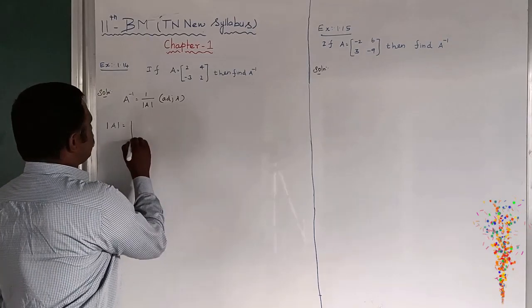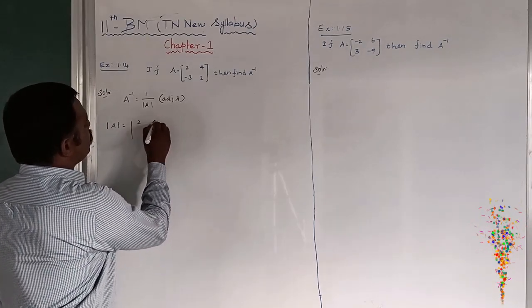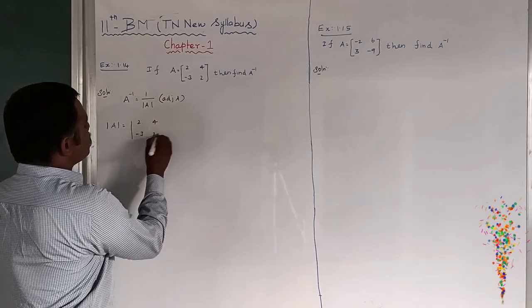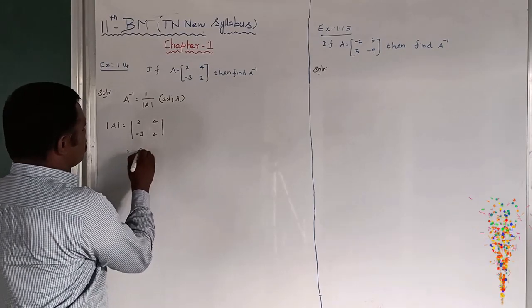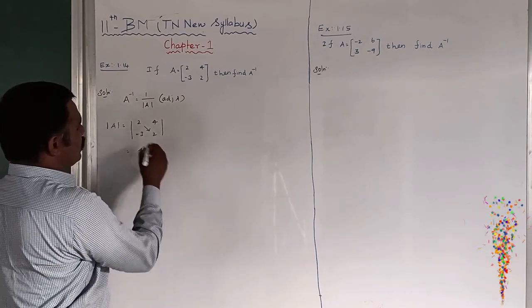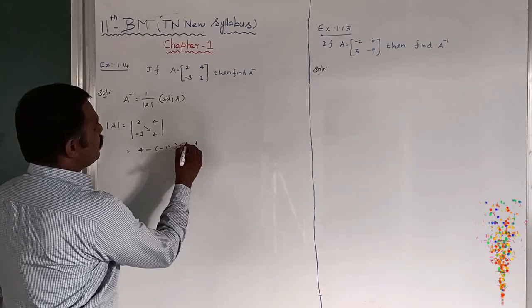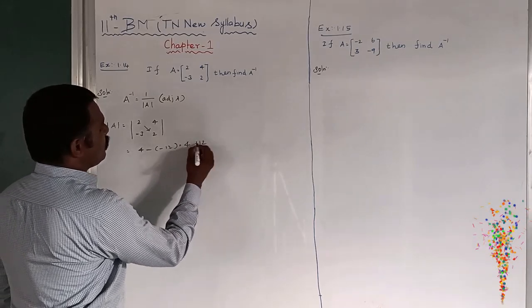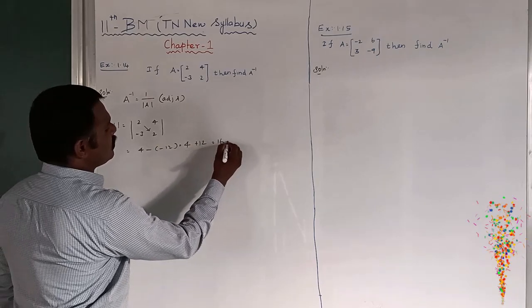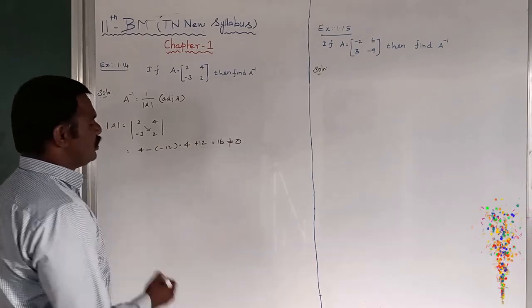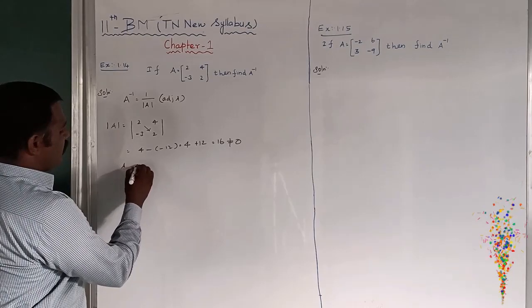So first we have to find out the modulus of A: 2, 4, minus 3, 2. This is equal to 4, 2 times 2 is 4, minus of minus 12, 4 plus 12. This is equal to 16, does not equal to 0.